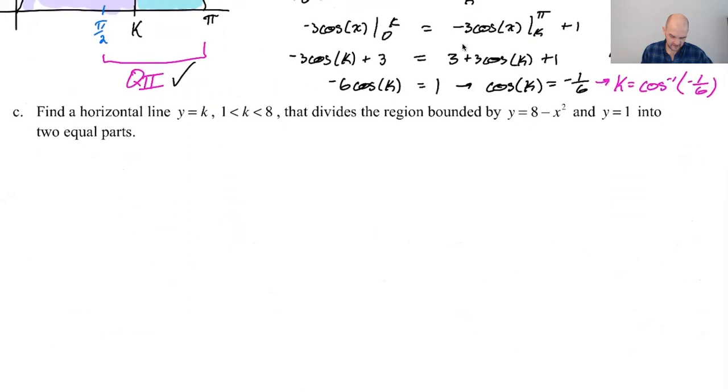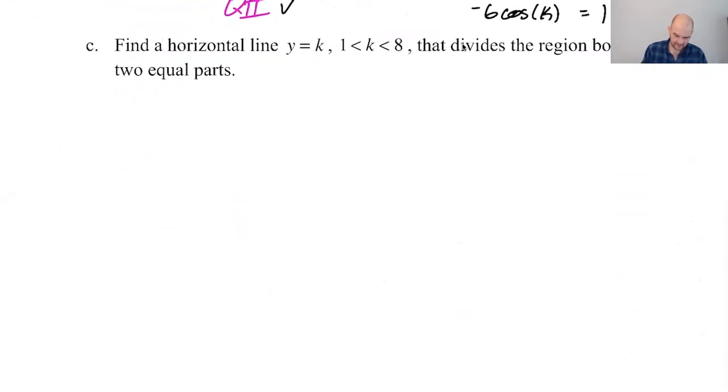All right, let's try this one. Find a horizontal line y equals k between one and eight that divides the region bounded by y equals 8 minus x squared. So horizontal line, this is different. And y equals one into two equal parts. So let's start with a graph and see if we can go from there.